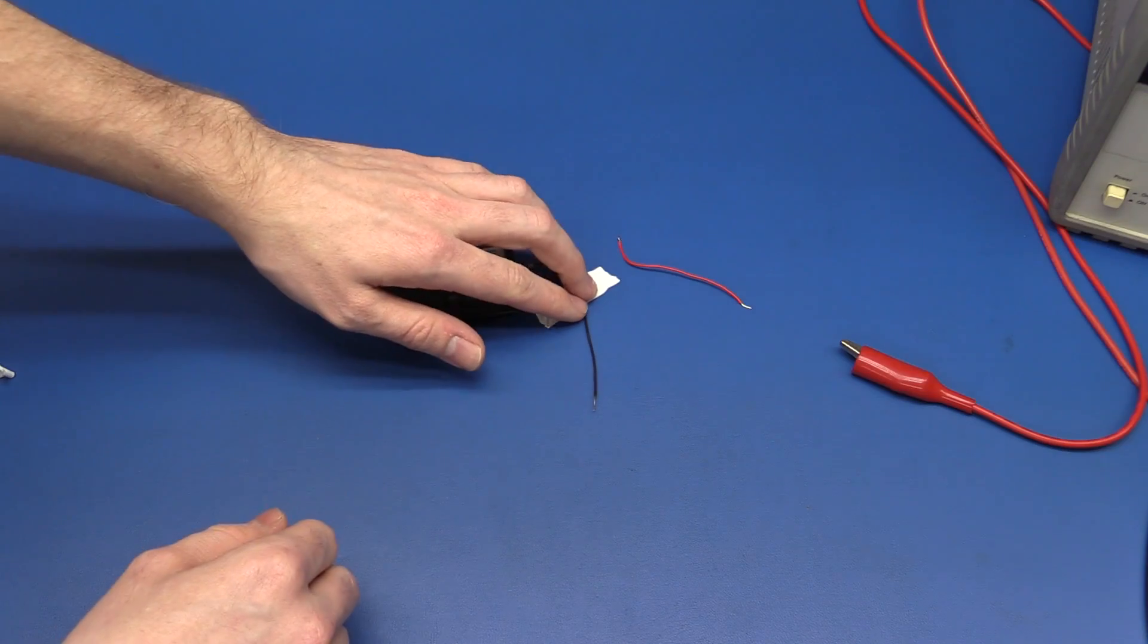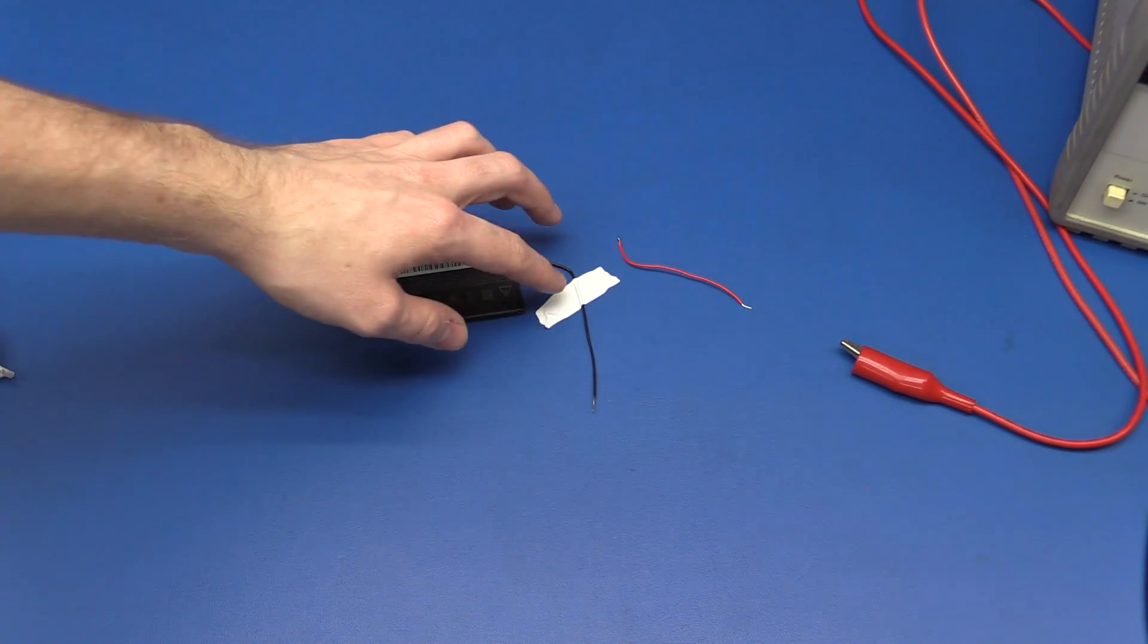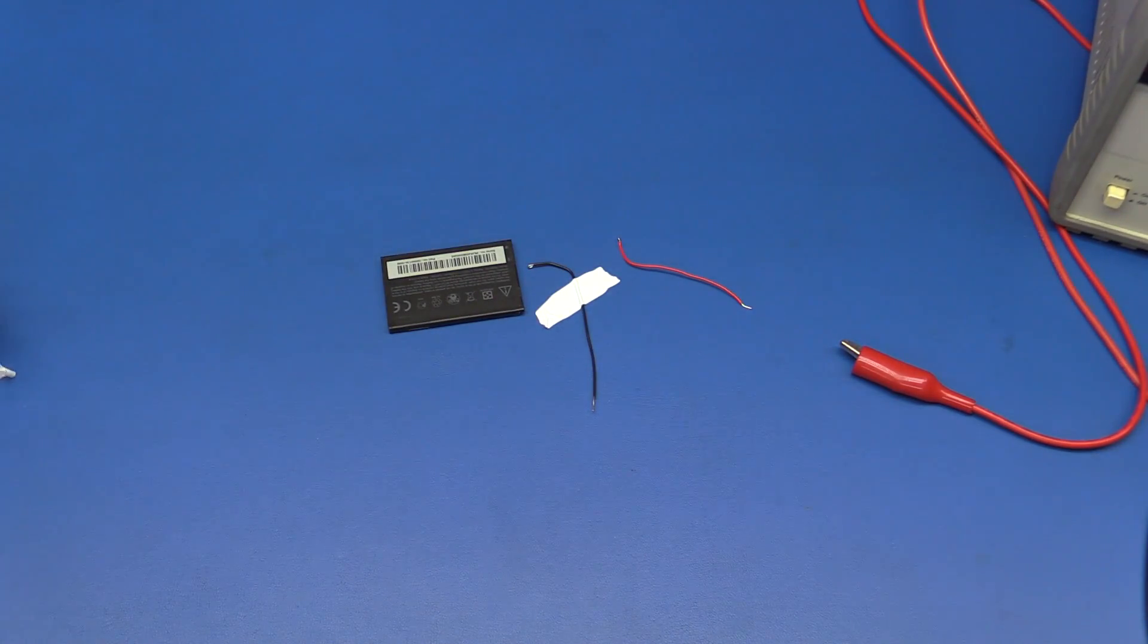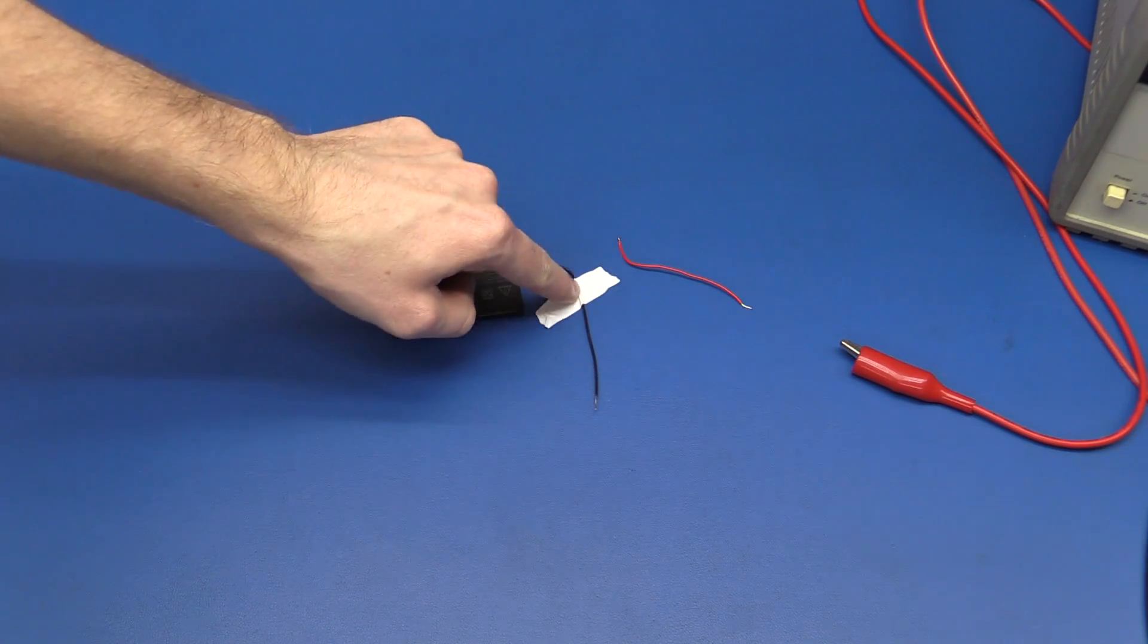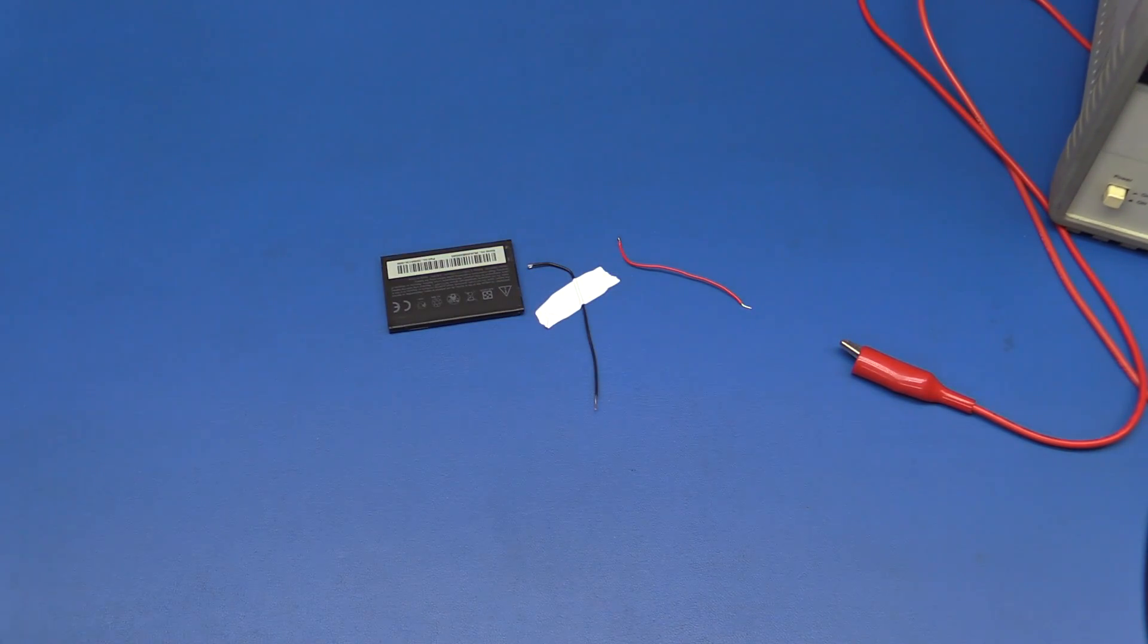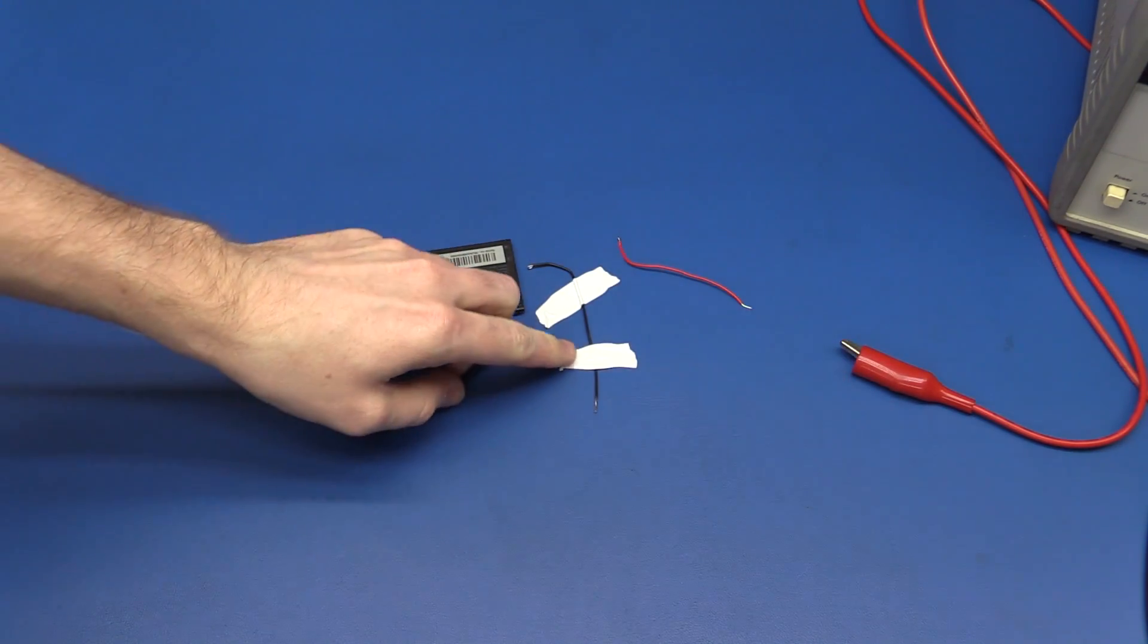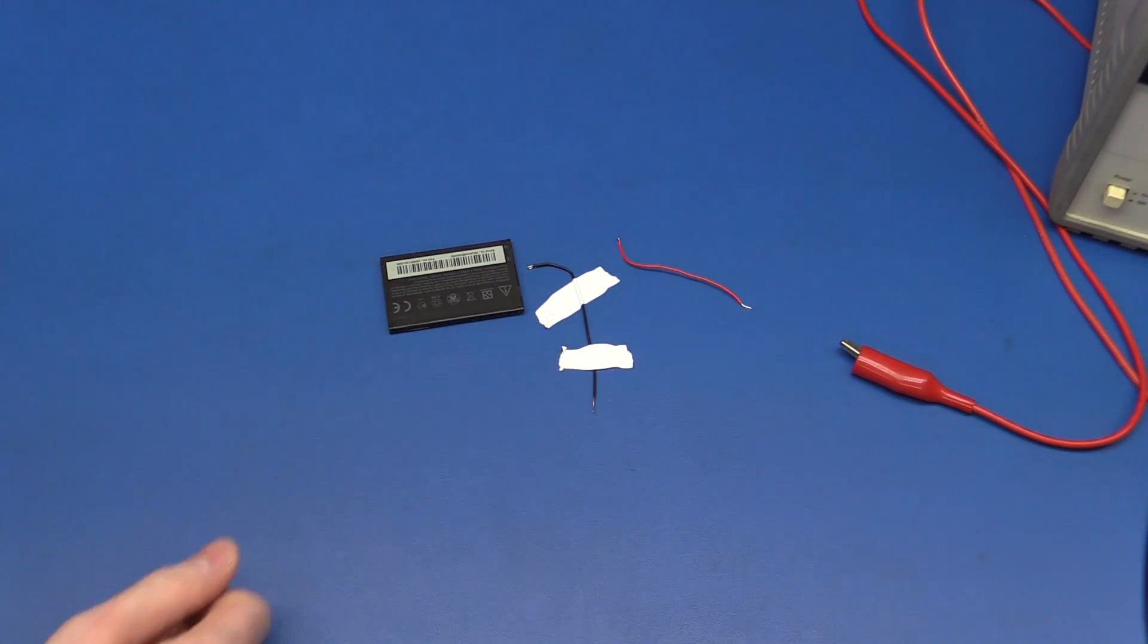Otherwise, it will kind of lift off and get loose over time. If you want to charge it for an hour, then this will probably get loose and the wire can slip away from the battery. So we just want to keep it as close to the wire as possible. What I mean is, if you stretch it like this, for example, it will pop off and you will lose the connection.